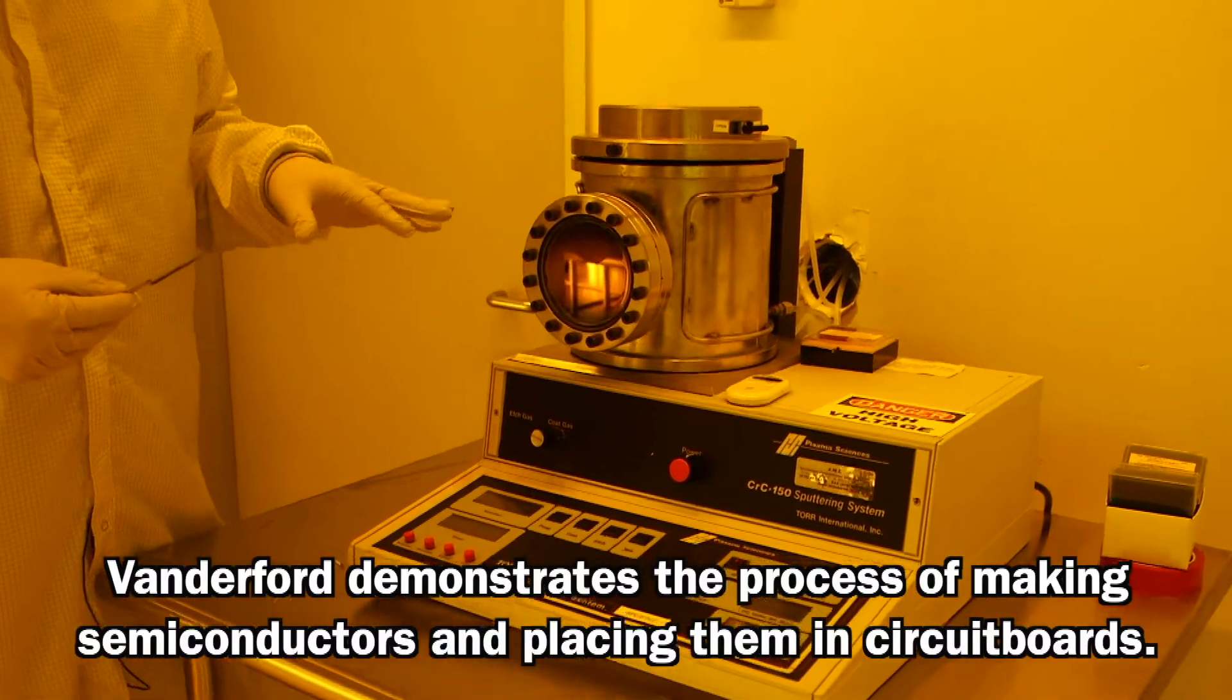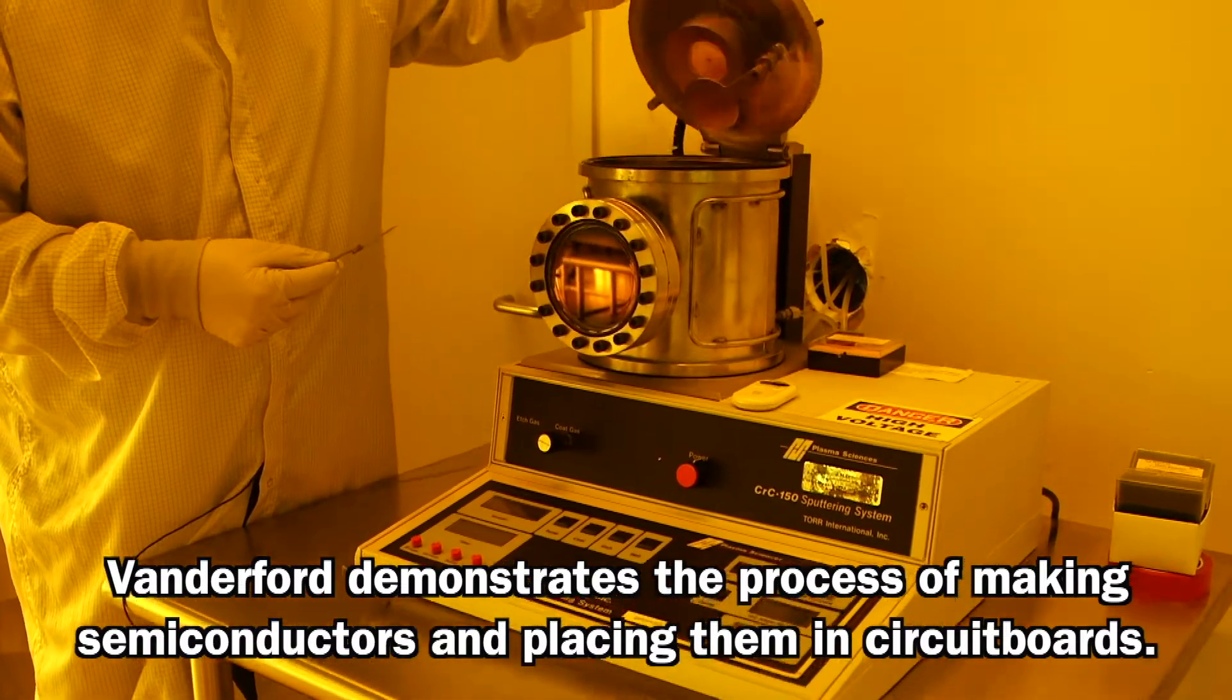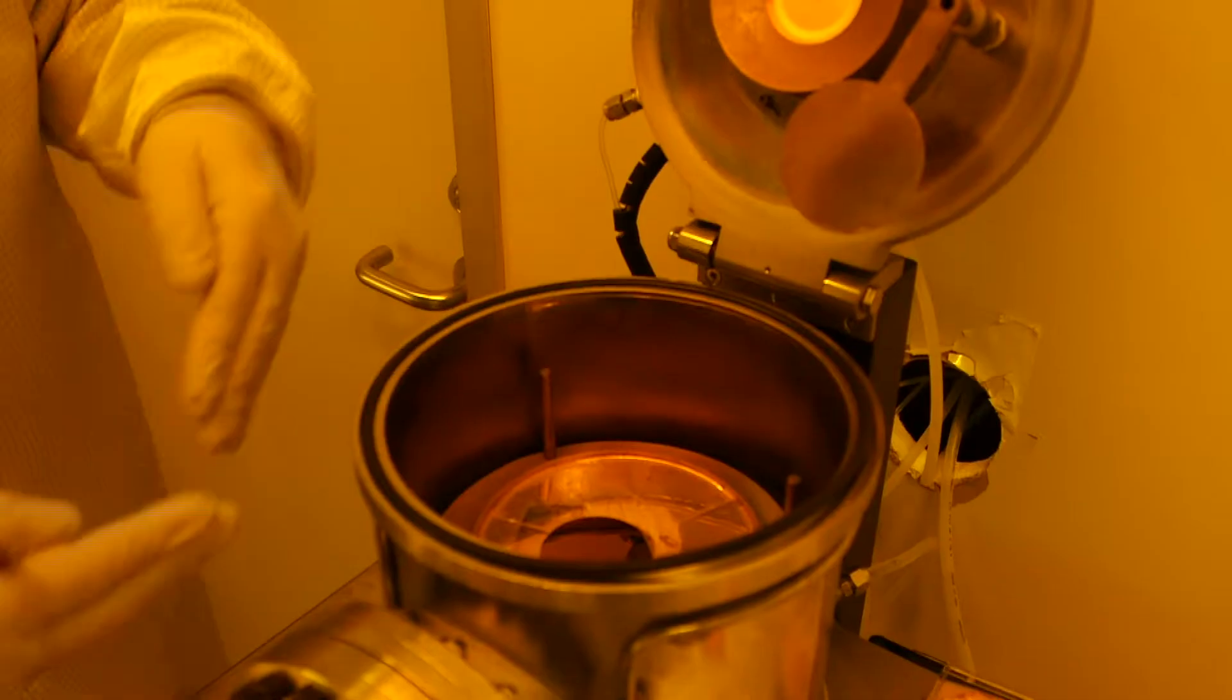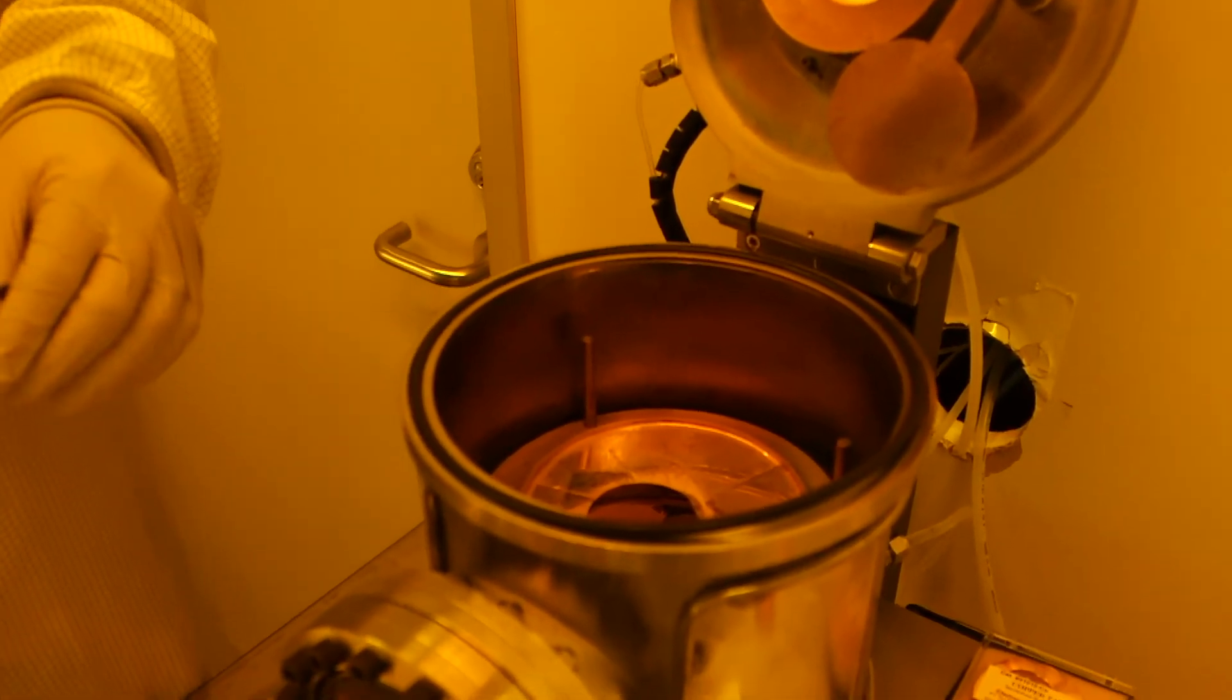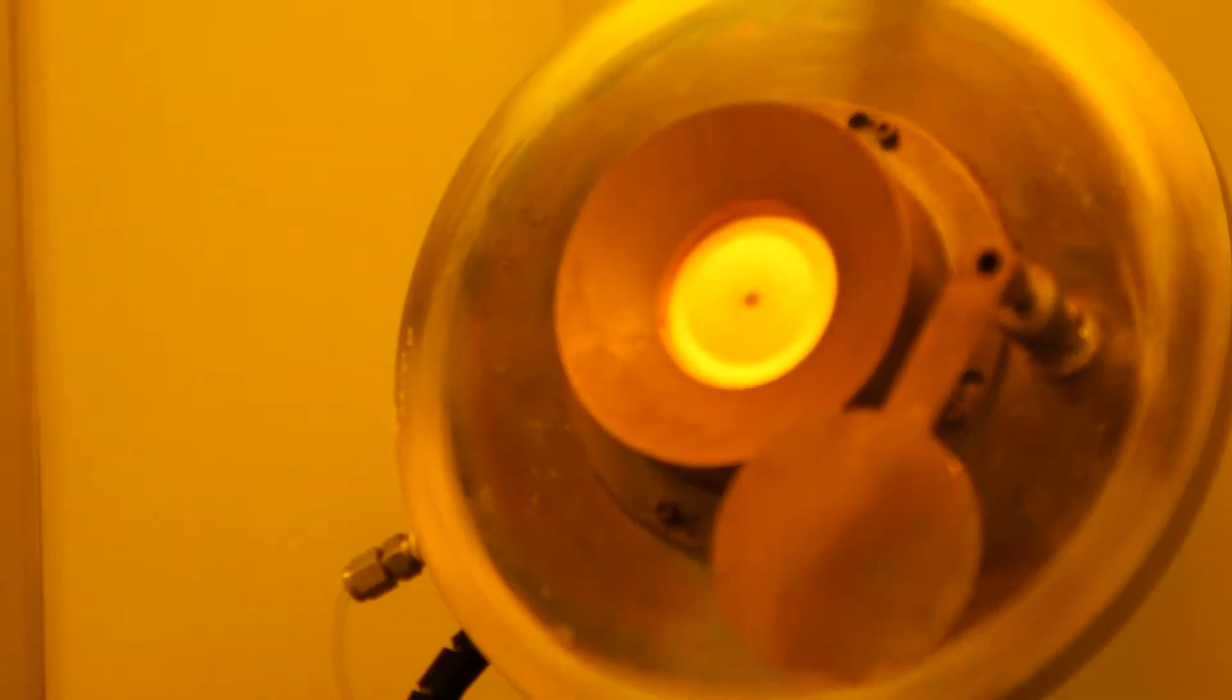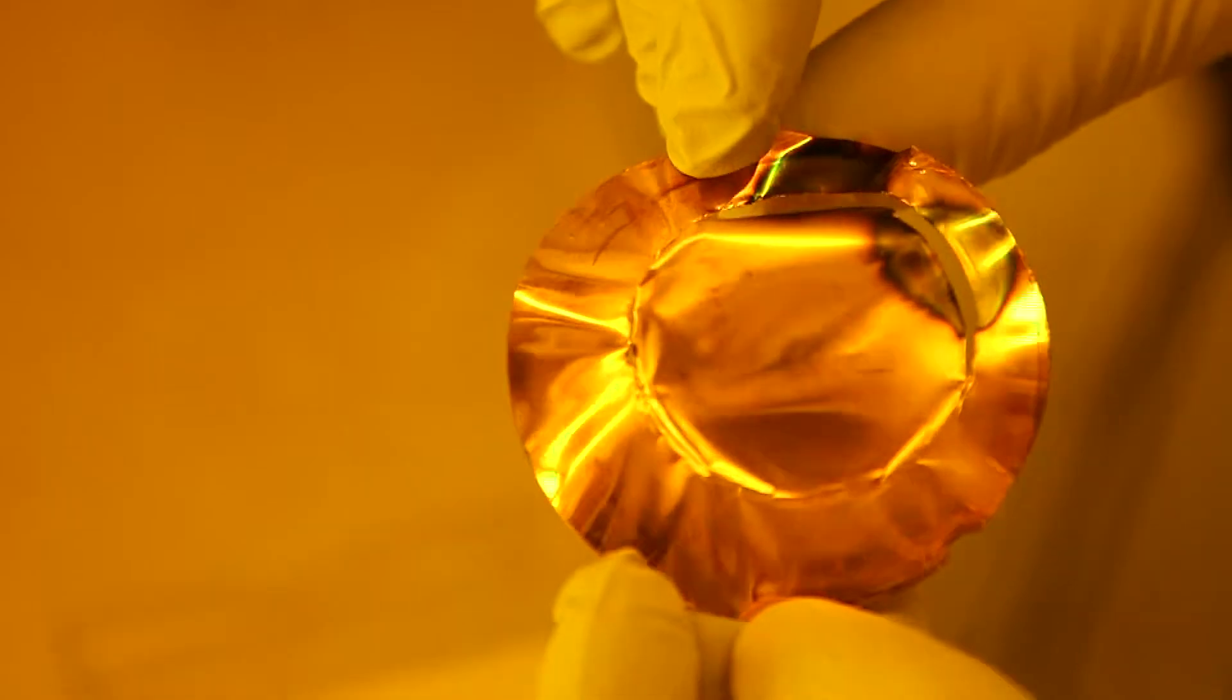This machine is called a DC sputtering system. It moves layers of atoms at a time from this copper target down to a silicon wafer, and it does that by first removing all of the air from the inside of this chamber and then firing ionized argon gas at this target that's up here. Every time an argon atom hits one of these atoms of copper over here, one of those atoms comes snowing down onto the surface of the silicon wafer.